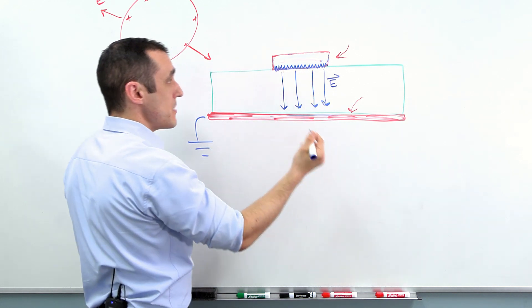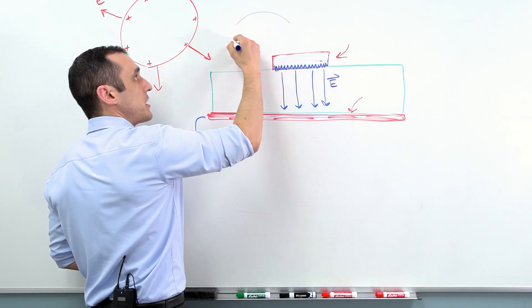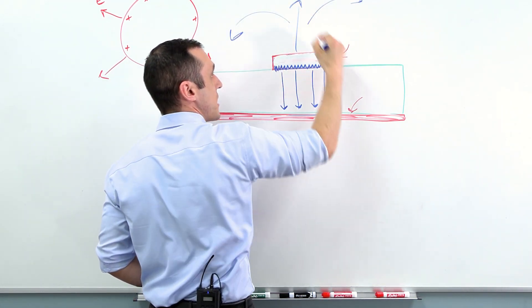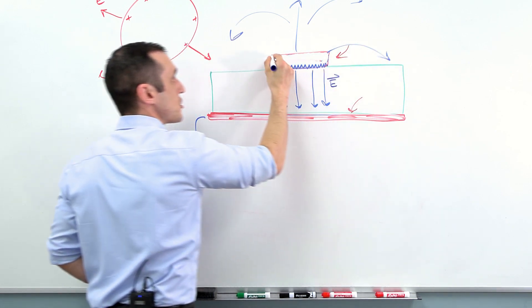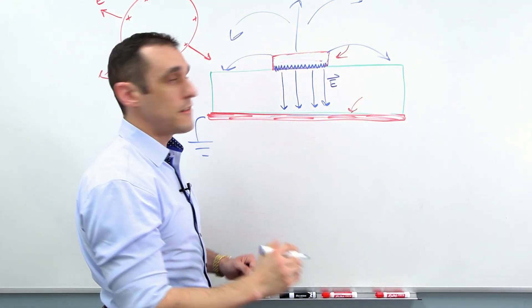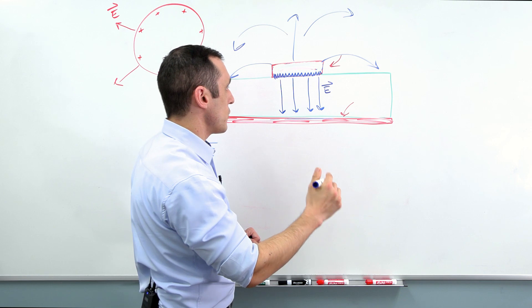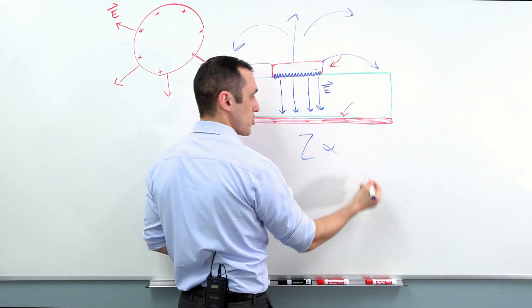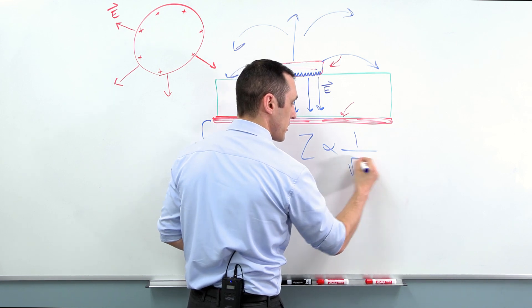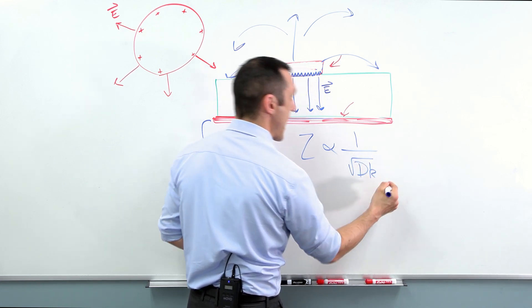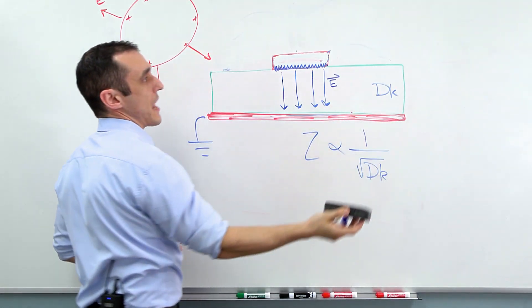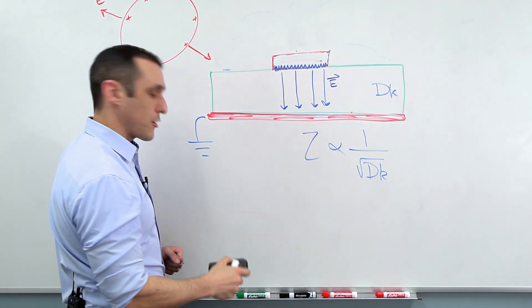We don't have any field being emitted from the top edge of this trace or from this edge of the trace or any of that. None of that would exist. And so the result is that our impedance equation would be proportional to one over the square root of just dk which is the dk value of our substrate. So that's what would happen if this picture were actually true.